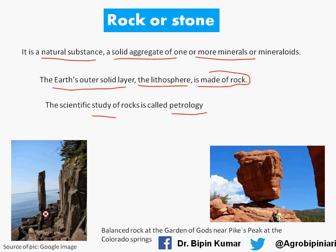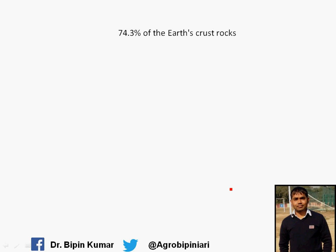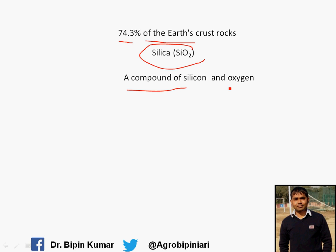Here you are seeing two pictures — one is of the sea, and the other is the Balanced Rock at the Garden of the Gods near Colorado Springs. This is a pictorial example of rocks. A very unique characteristic and feature of this rock is how it remains balanced — so many times earthquake events have happened but this rock was not destroyed. If we go into a little detail, 74.3% of earth's crust rocks is silica, which is a compound of silicon and oxygen.